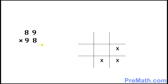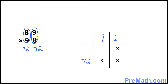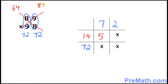Let's do one more example. 8 times 9 is 72, so put 2 right up here and 7 right here. The left-hand side digits are also 8 times 9, which is 72, so 72 shows up right here. Now cross-multiply: 8 times 8 is 64, and 9 times 9 is 81. 64 plus 81 is 145, so write 5 right here and 14 carries over to the next step.